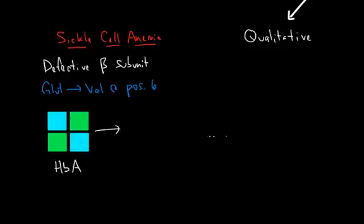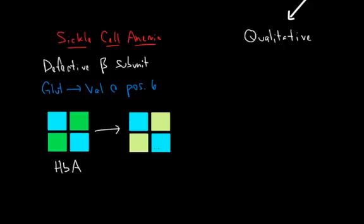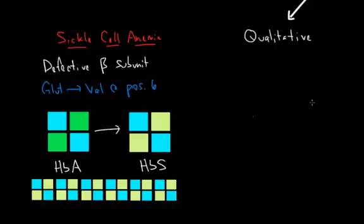But what happens in sickle cell anemia? Well, let's represent it like this. And this variant of hemoglobin is called HbS. And it's made of two alpha subunits, two normal alpha subunits in blue, and two defective beta subunits in yellow. This small structural change is enough to cause the hemoglobin S molecules to polymerize within the cell, like this.